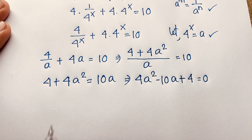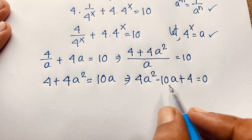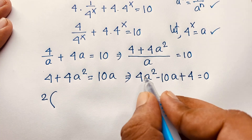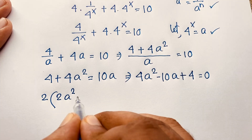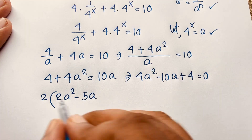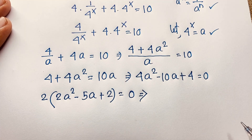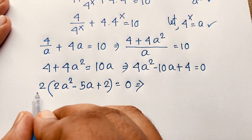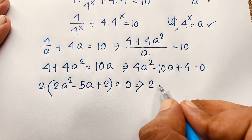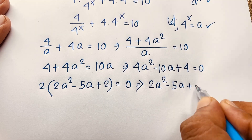Here we have 4a squared minus 10a plus 4. We can see that 2 is common throughout. Taking out the factor of 2: 2(2a squared minus 5a plus 2) equals 0. Dividing both sides by 2, we get the nice quadratic equation: 2a squared minus 5a plus 2 is equal to 0.